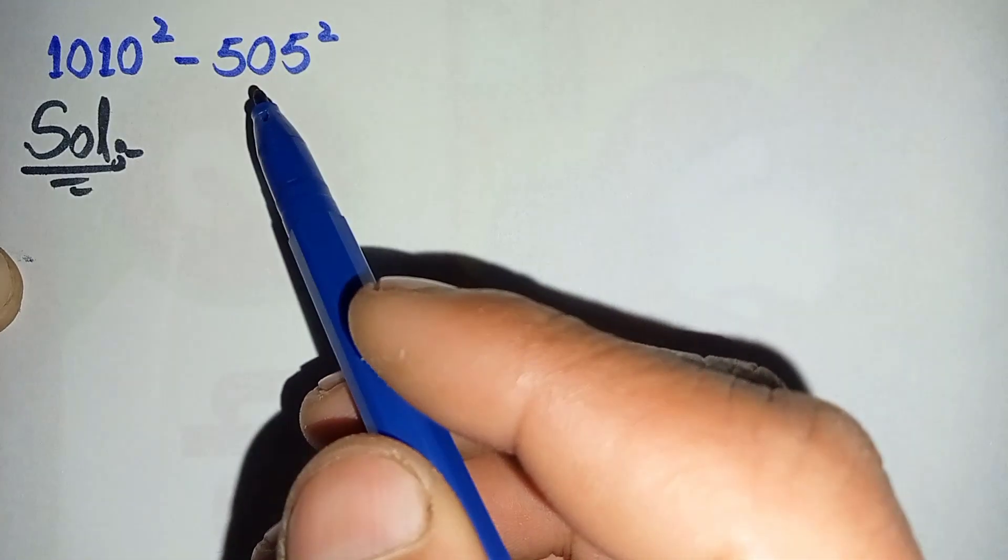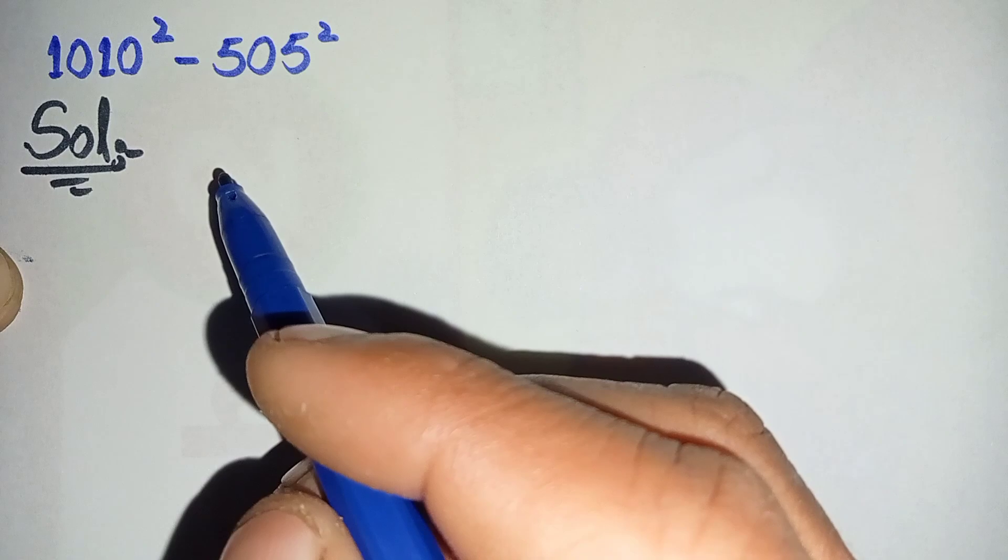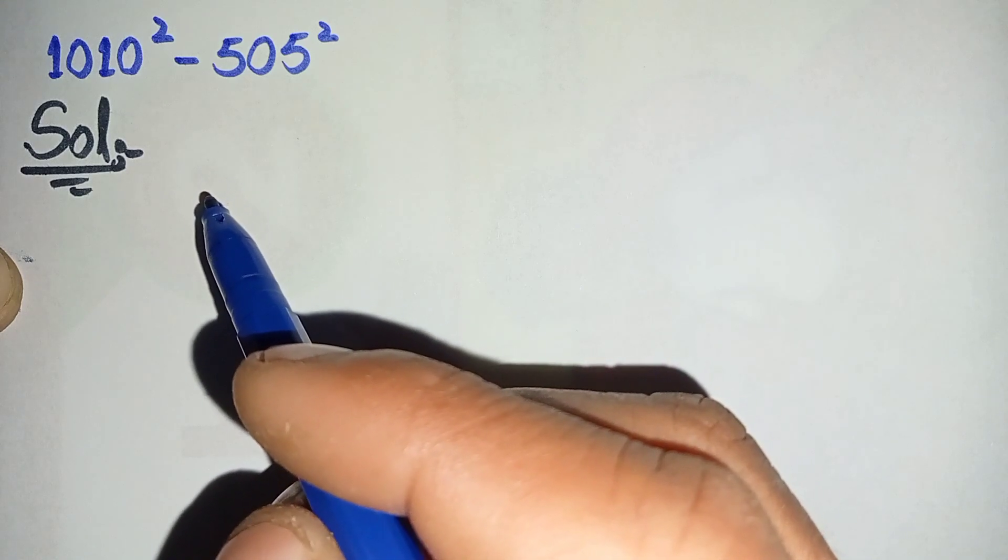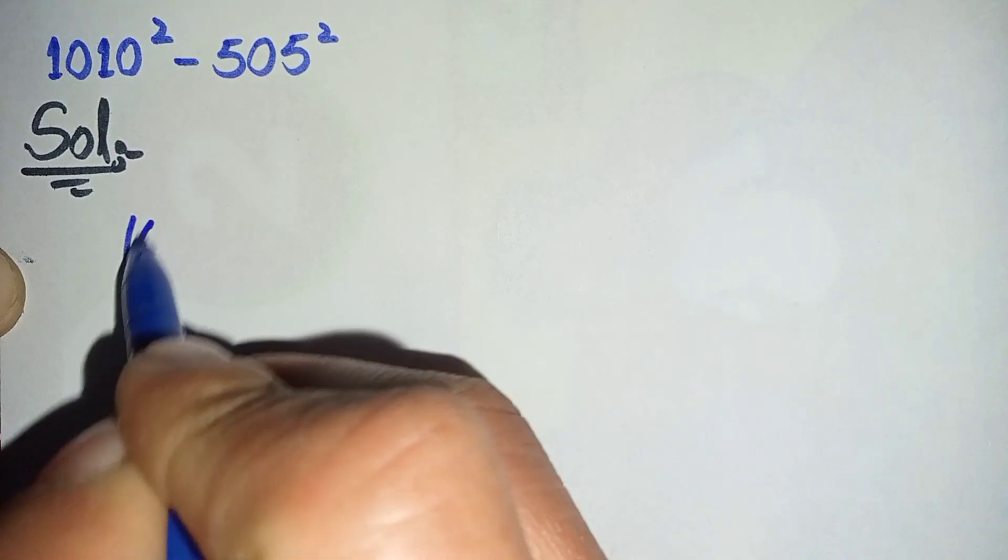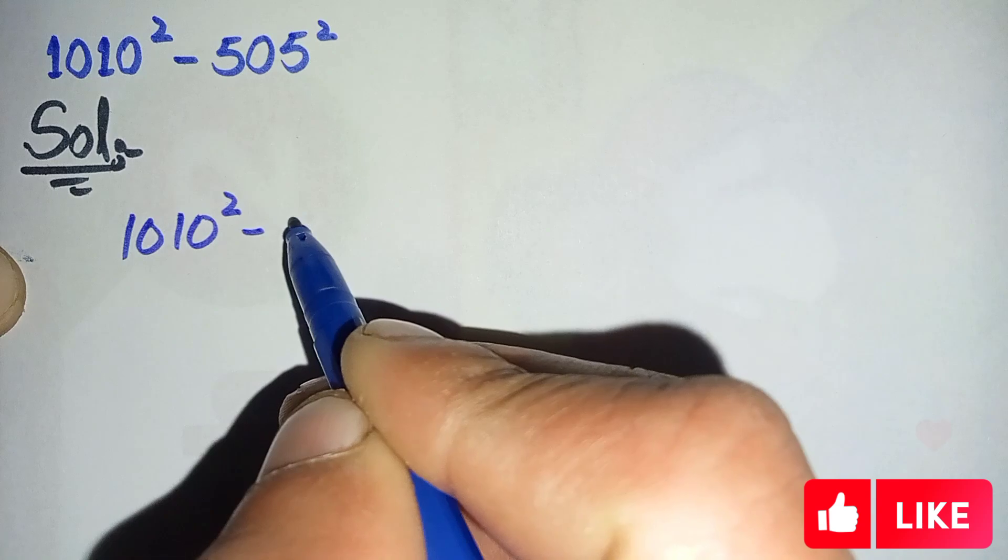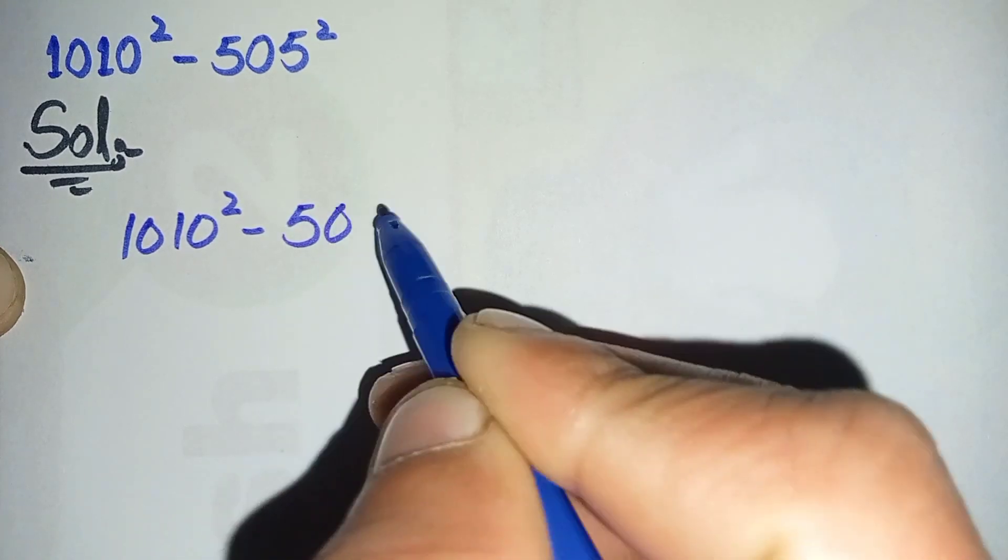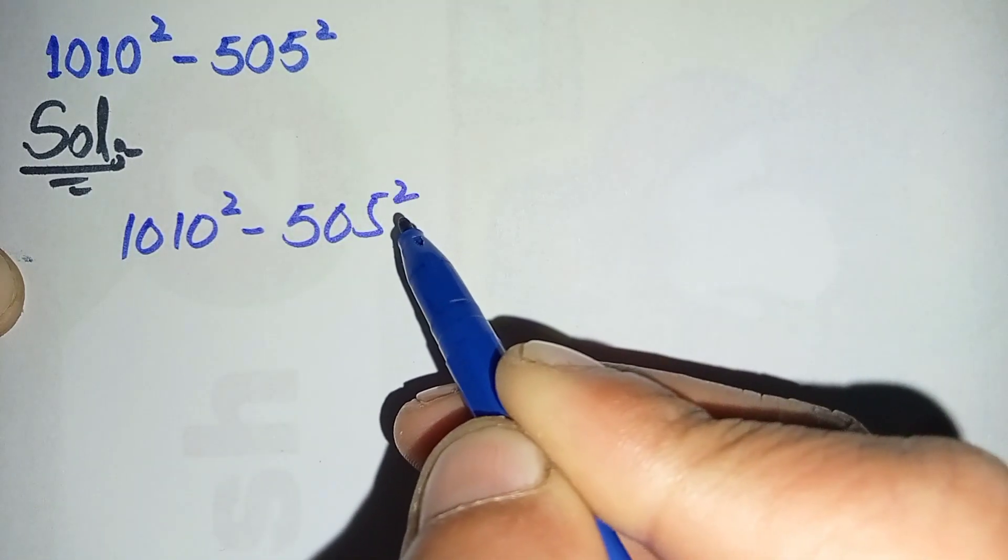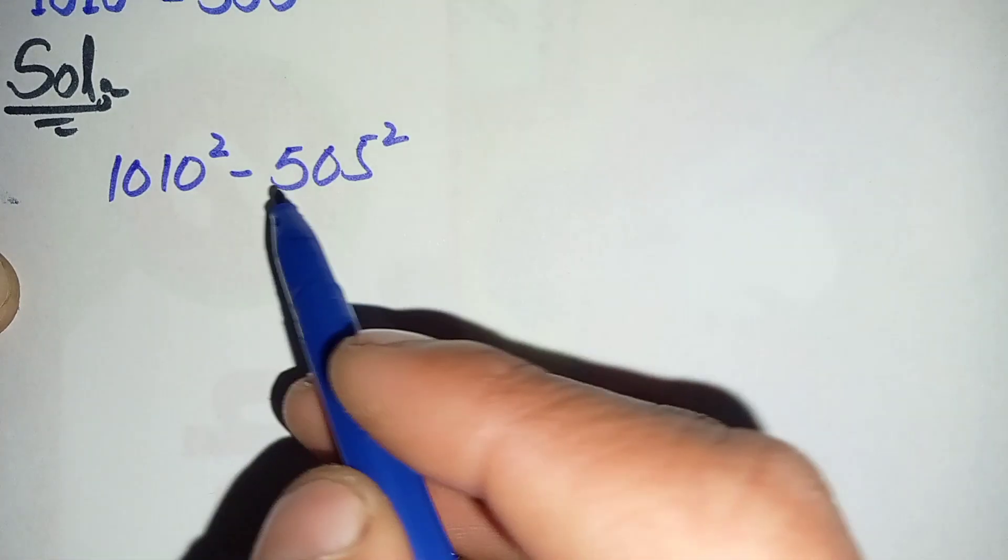And then we will rewrite this question in the solution again and we will try to solve it step by step. So the question is 1010² - 505².